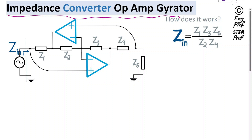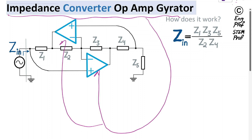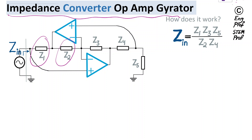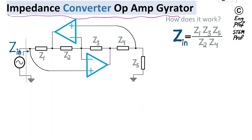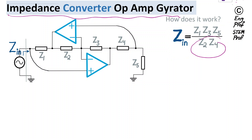The impedance converter op-amp gyrator circuit shown here is designed with two op-amps and five impedances Z1, Z2, Z3, Z4, Z5. We want to show that when measured at the input port, the input impedance Zin is equal to Z1 times Z3 times Z5 in the numerator, divided by Z2 times Z4 in the denominator.